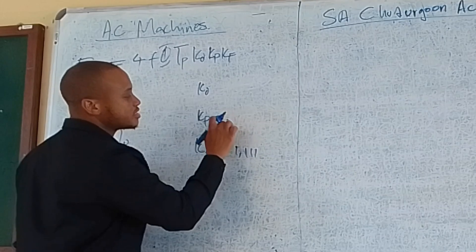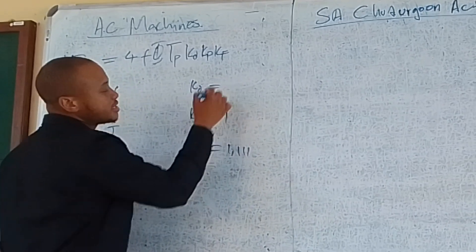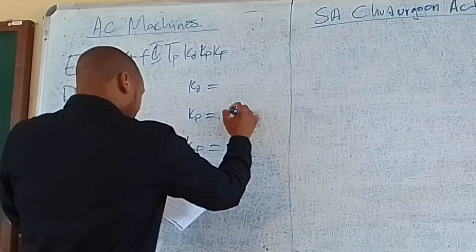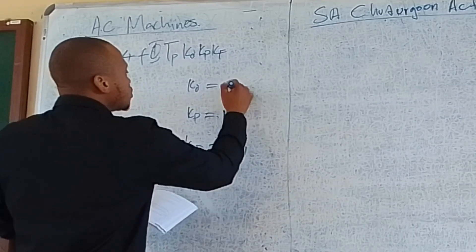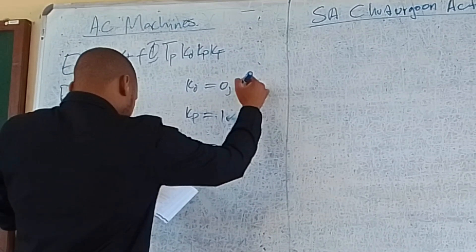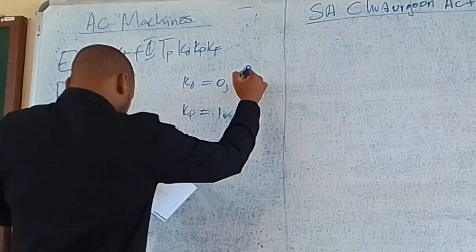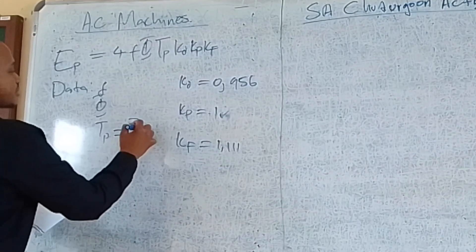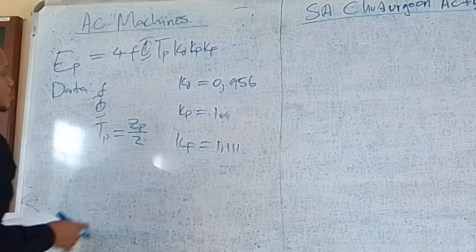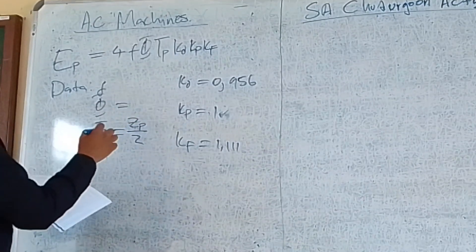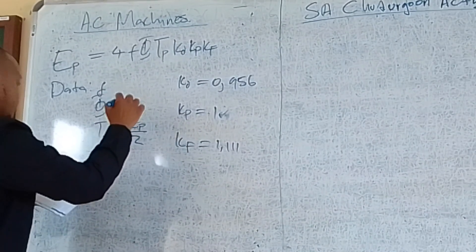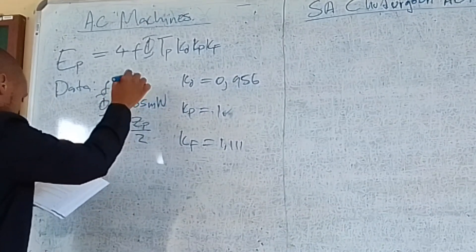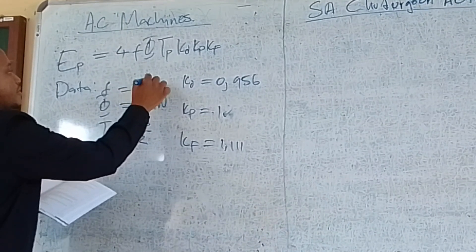Kp is called the pitch factor. In this equation, they said our machine is fully pitched, so it is 1. Kd is given in the text as 0.956. The Tp needs me to calculate the number of turns per phase. The flux is given as 55 milliwebers, and the frequency is 50 Hz.